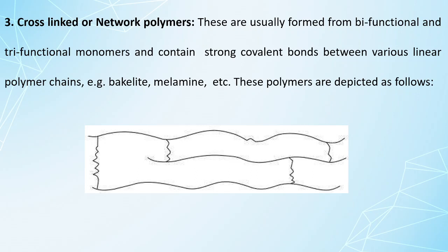The third structural type is cross-linked or network polymers, formed from bifunctional and trifunctional monomers. These macromolecules contain different functional groups such as -OH, -NH₂, or -NO₂. The cross-linked network has an uneven interconnected structure, and examples include Bakelite and melamine.